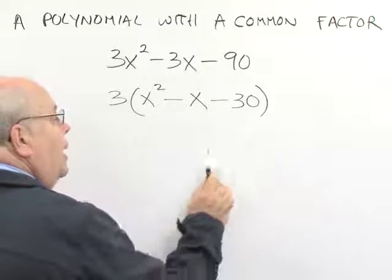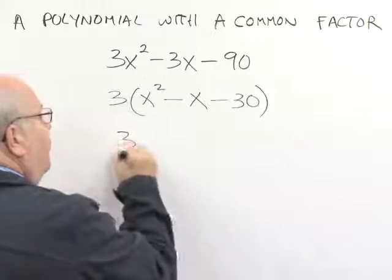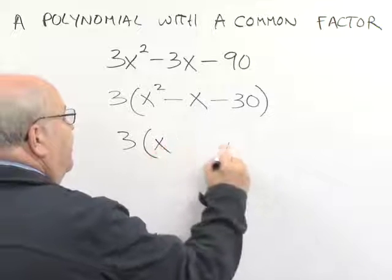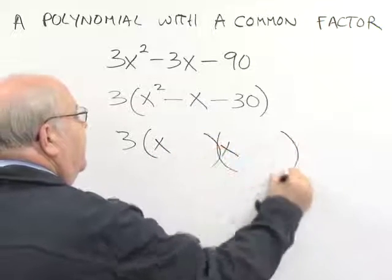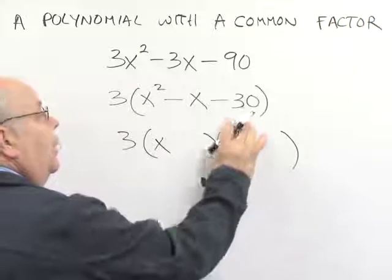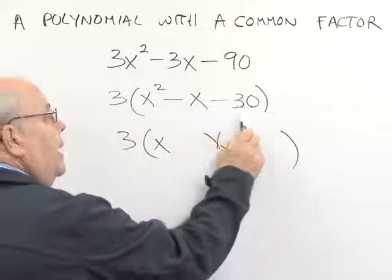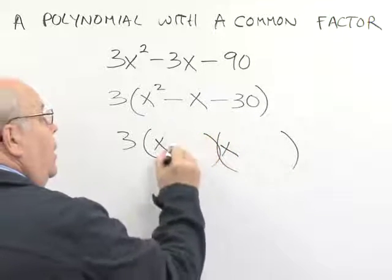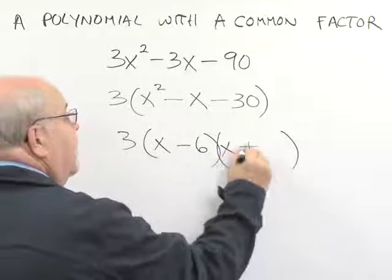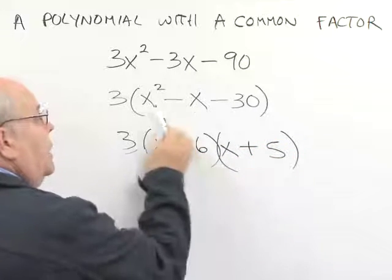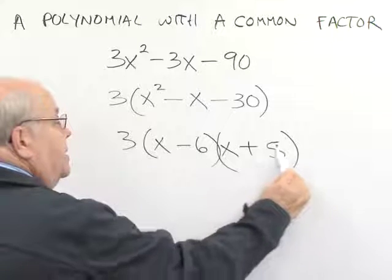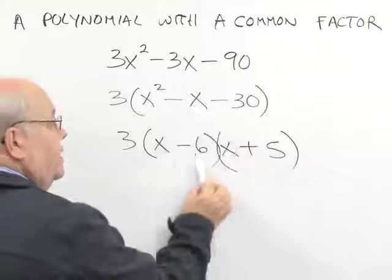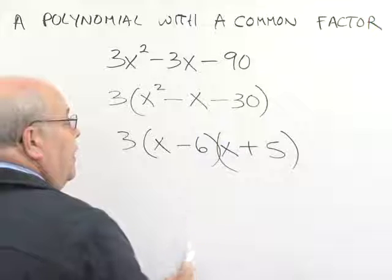Now this trinomial we recognize is a trinomial we can factor. We know that two numbers you can multiply to get negative 30 but add up to get negative 1 would be minus 6 and plus 5. We know that x times x is x squared, minus 6x and plus 5x is minus x, minus 6 times 5 is minus 30.